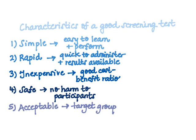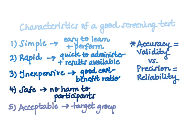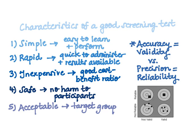Accuracy is also referred to as the validity of a test. This is as opposed to a test's reliability, which measures its precision. I'm going to pull up an image to look at the differences between these two.